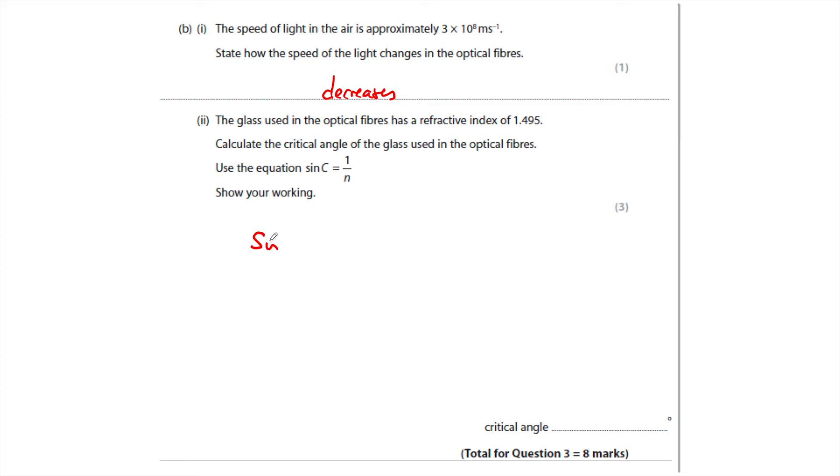So first of all, we need to put our values in. So sine of c is 1 over 1.495, and that's equal to 0.66896. I would quote it to five significant figures because we're given four already.